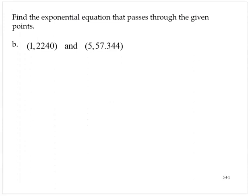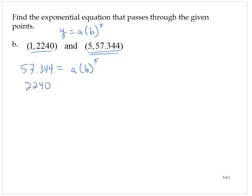Let's look at another one. Find the exponential equation that passes through the given points 1 comma 2240 and 5 comma 57.344. We want y equals a times b to the x. I'll use the second point first. 57.344 equals a times b to the fifth. Using the first point, 2240 equals a times b to the first.